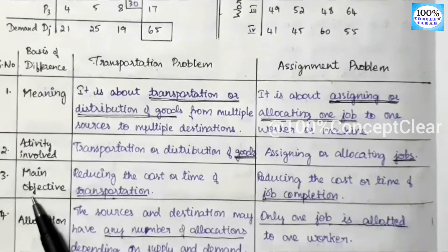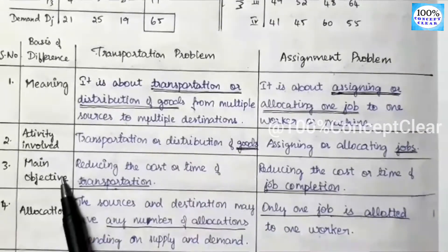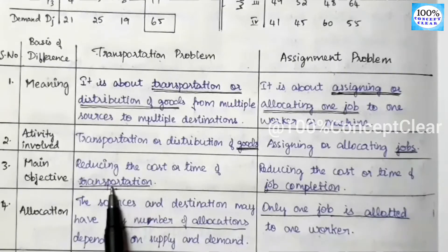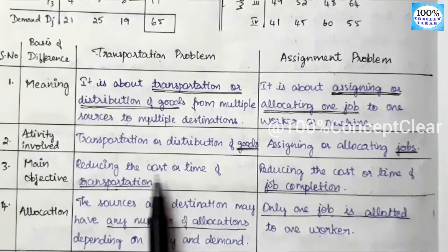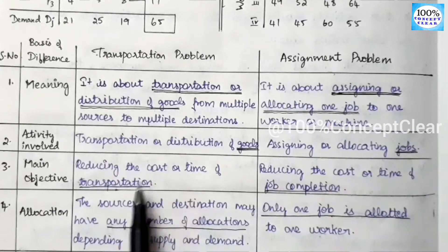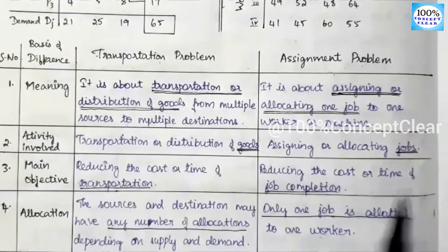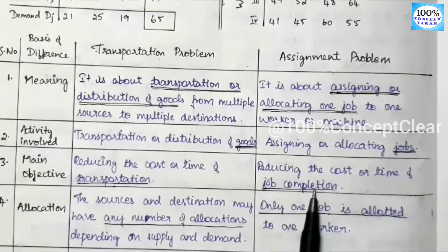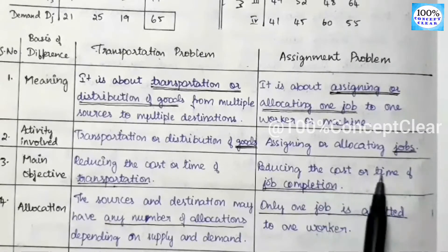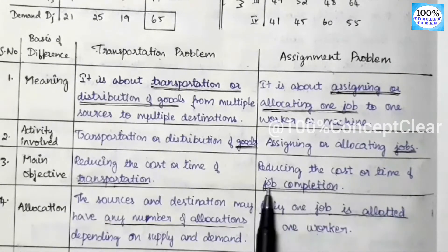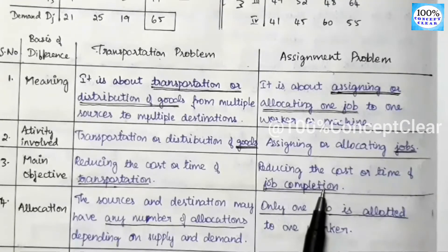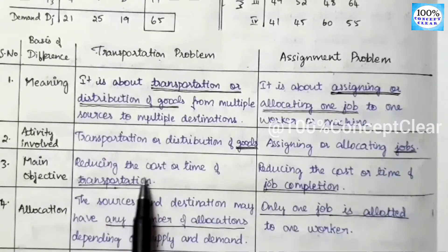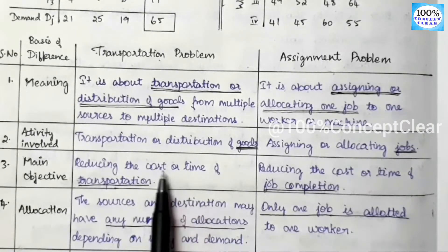The next difference is the main objective. The main objective of the transportation problem is reducing the cost or time of transportation — we minimize the cost and time of transporting goods. For the assignment problem, the main objective is reducing the cost or time of job completion.